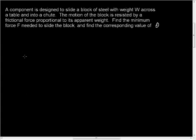A component is designed to slide a block of steel with weight W across a table and into a chute. The motion of the block is resisted by a frictional force proportional to its weight or to its apparent weight. Find the minimum force needed to slide the block and find the corresponding value of theta.